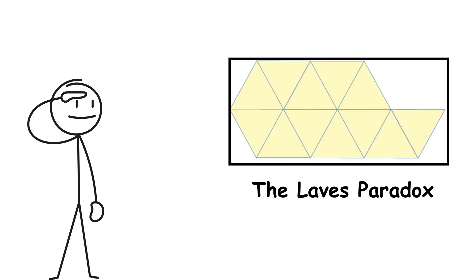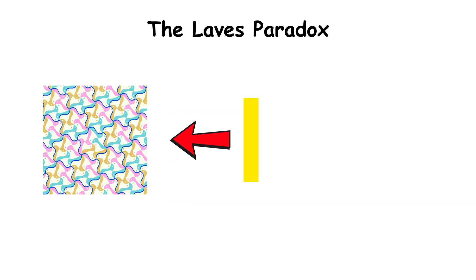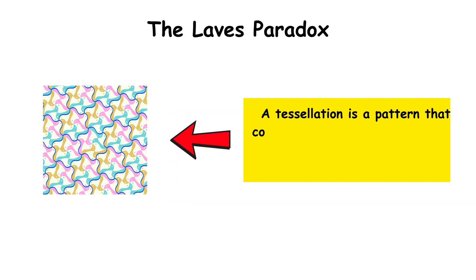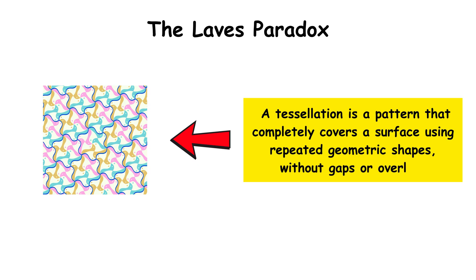The Leib's Paradox. This paradox arises from the study of tessellations. A tessellation is a pattern that completely covers a surface using repeated geometric shapes, without gaps or overlaps.